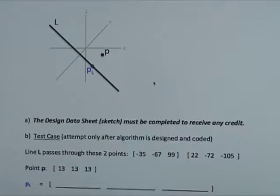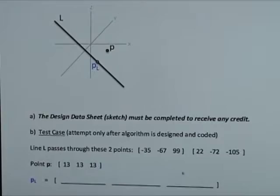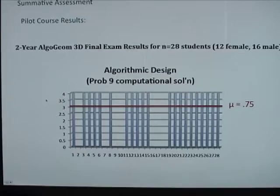You'll notice a design data sheet including a sketch is required. There's reasonably no hope of getting the correct numerical answer without an algorithm, and there's no hope of getting an algorithm without a sketch. That's why we ask for the sketch. It's also to help us debug and see where students fell down. After they've sketched their way to a solution, they've coded it into a numerical algorithm, run it graphically to make sure it looks right on the screen, then they're ready to plug in a test case. Here's the line passes through these two given points, and point P is at these coordinates. Students then crank out the numeric solution to P_L.